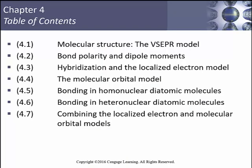Here's our chapter breakdown: We'll cover molecular structure with the VSEPR model for 3D shape, bond polarity and dipole moments, hybridization and the localized electron model (also called the valence bond model), then the molecular orbital model. We'll look at bonding in homonuclear and heteronuclear diatomic molecules, and combine the localized electron and molecular orbital models.